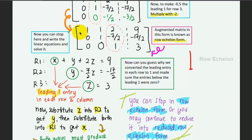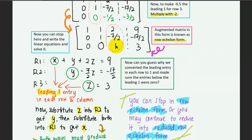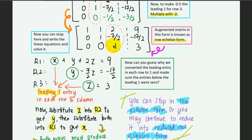At this point you can stop and write out the linear equations — this is known as row echelon form, where the leading ones are arranged in descending staircase form and all entries below each leading one are zero. Multiplying this back by the X, Y, Z vector gives: X + Y + 2Z = 9 for the first row, and corresponding equations for the second and third rows, with the last equation giving Z = 3.